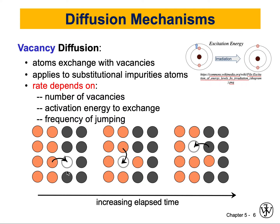Each circle in the schematic represents an atom, and the white circle is a vacancy — a location where we don't have an atom. Assuming we have a vacancy, nearby atoms will move into that vacancy, and the vacancy will move to the original location of that atom. This is what we mean by vacancy diffusion. It applies to substitutional impurity atoms, meaning the vacant space should be similar in size to the atom moving into it — that's why we call it substitutional.